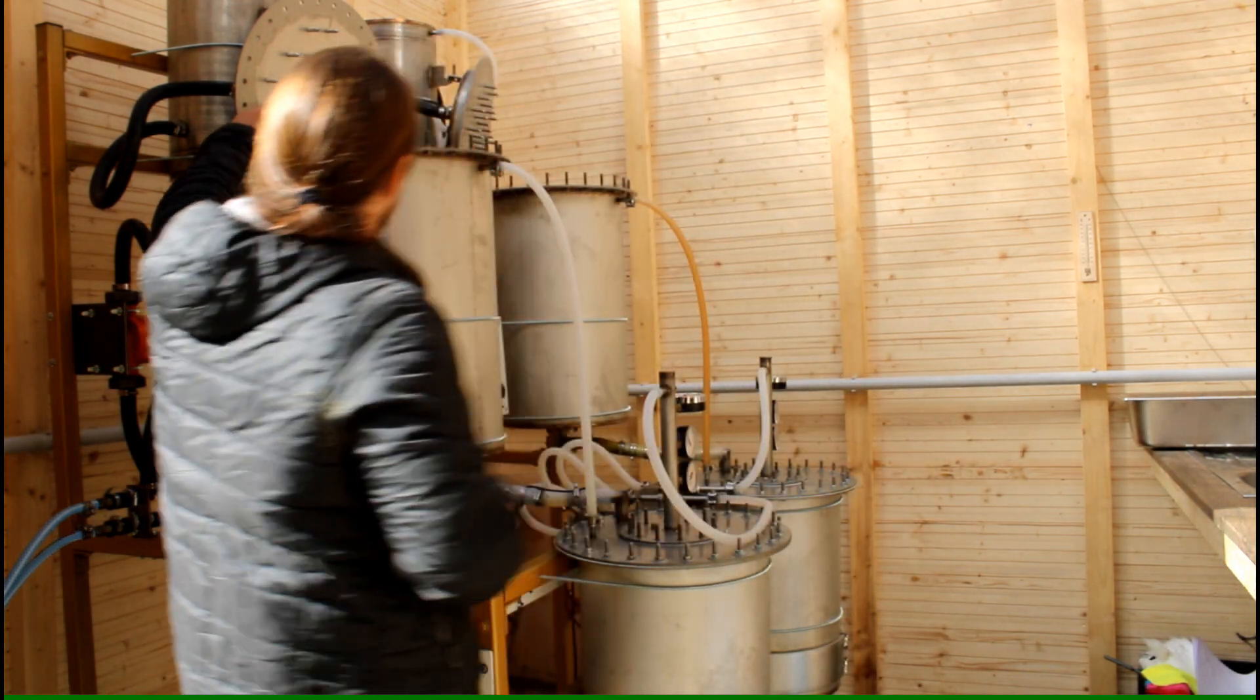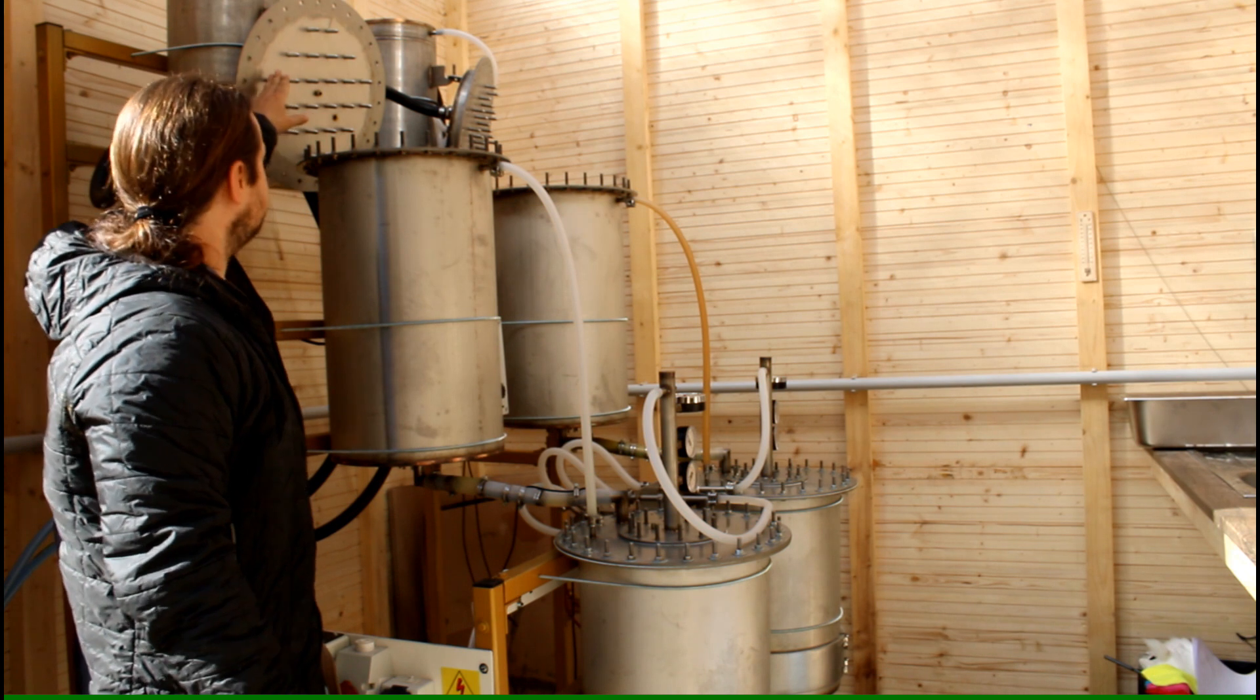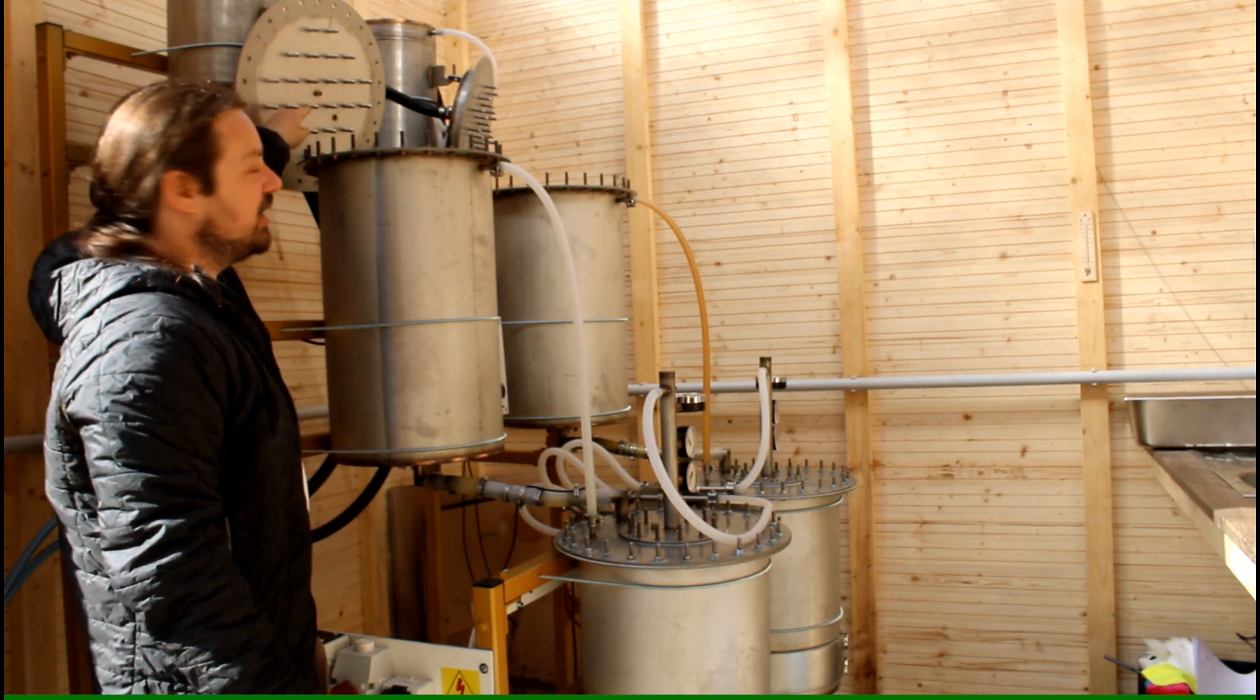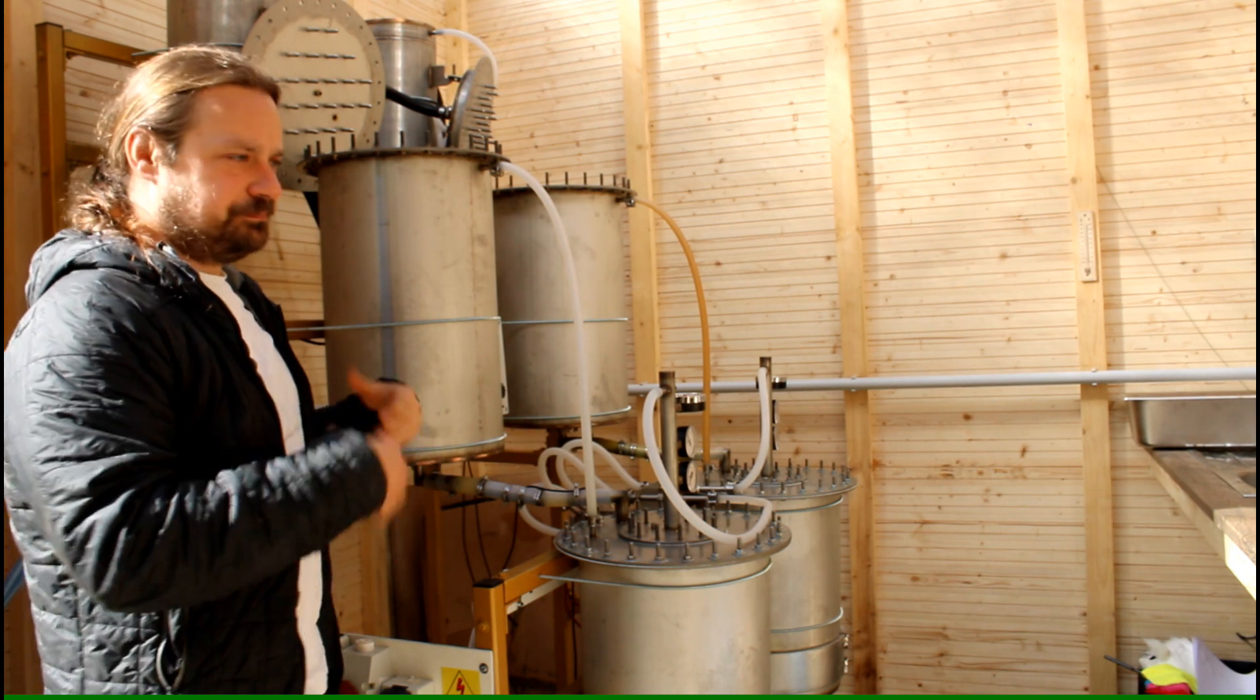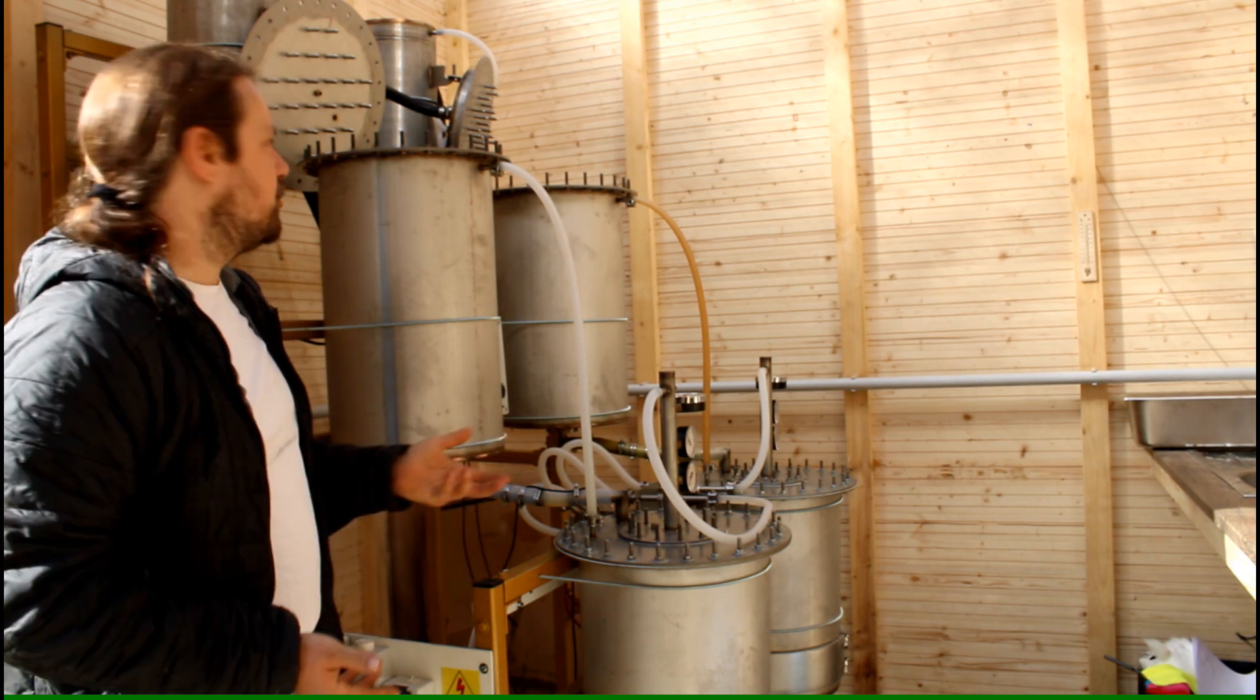And start to condense here on that actively cooled lid here. So the spikes that you can see, they are actually there as nucleation points for the vapor to start forming drops.